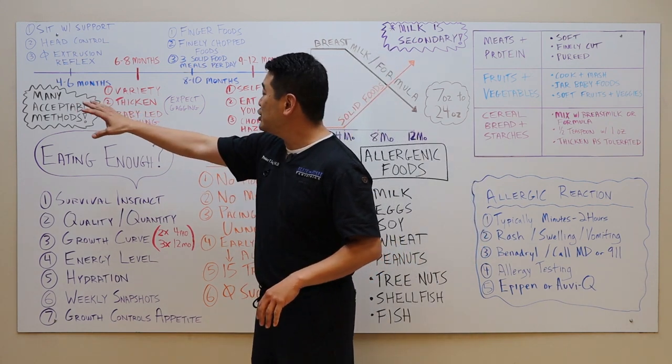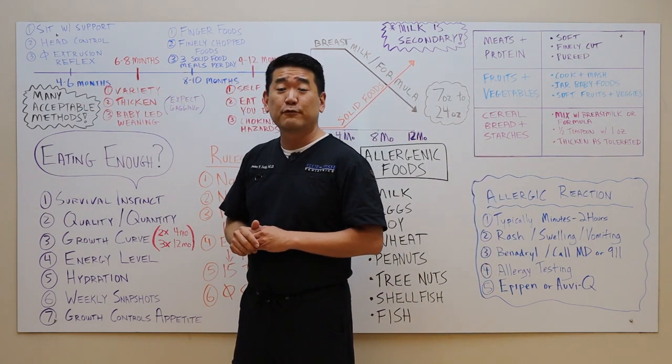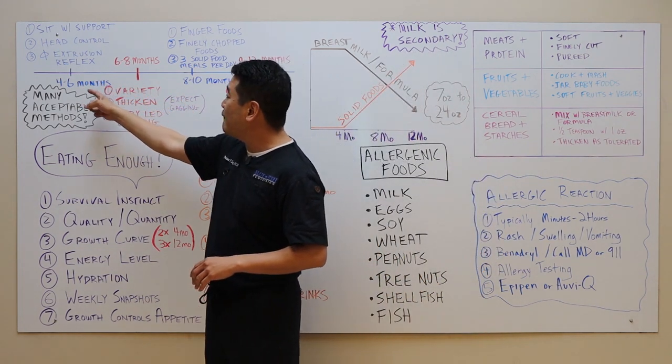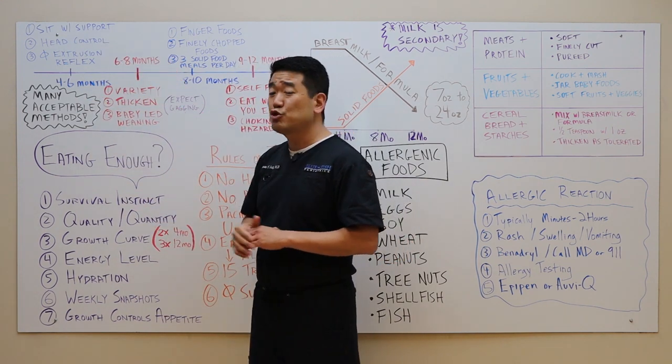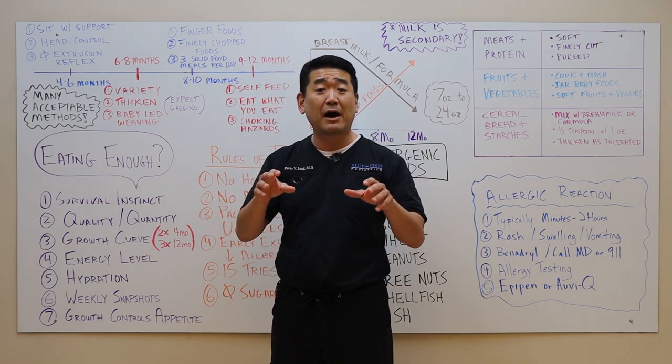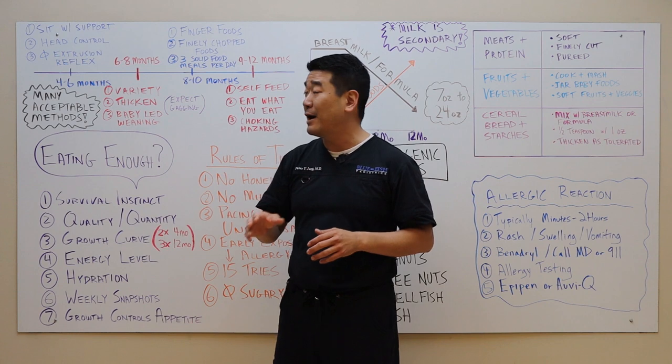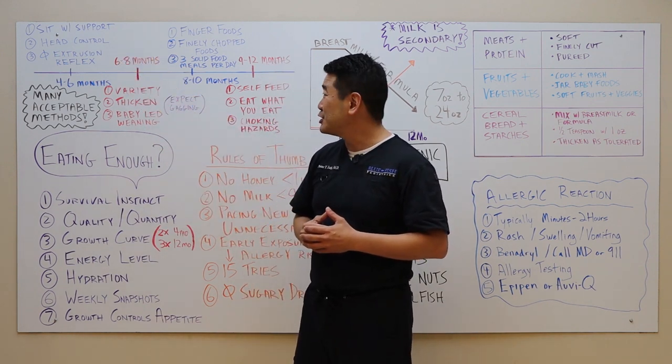The first thing to know is that there is a general timeline that these kids follow and you will know that your child is ready for solid food feeding when around four to six months of age, they can sit with support, they have good head control, and they no longer have their extrusion reflex where they are sticking their tongue out of their mouth repeatedly and pushing the food out.